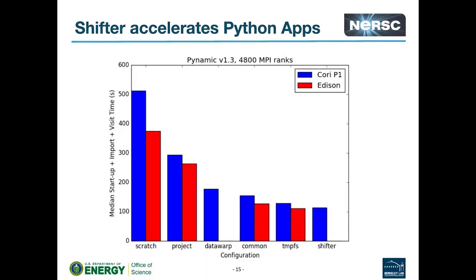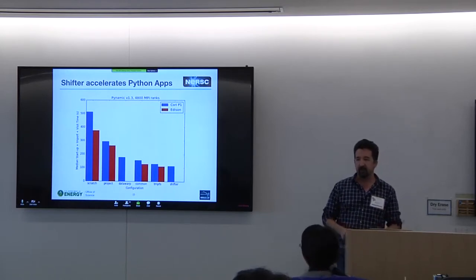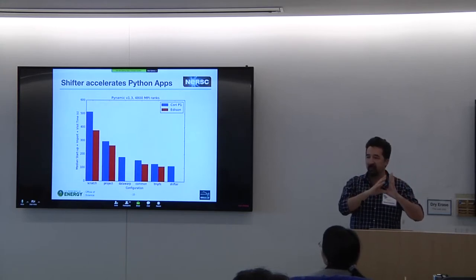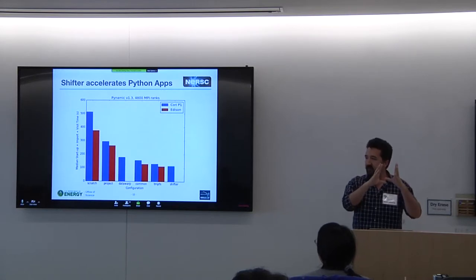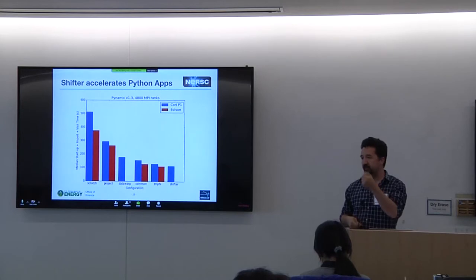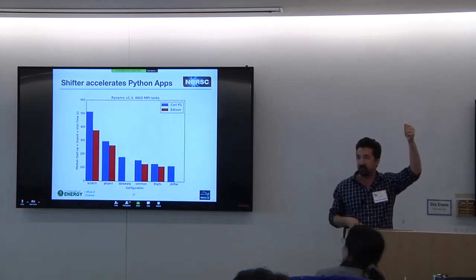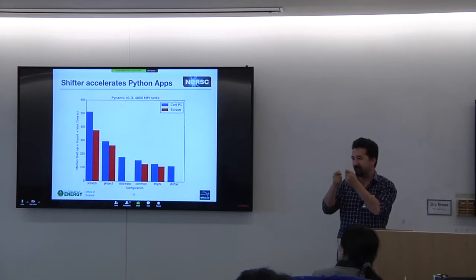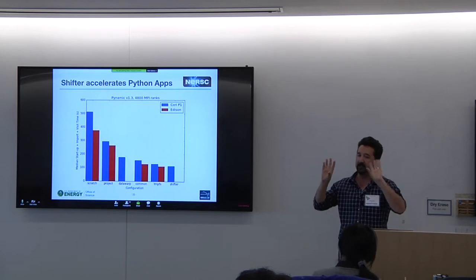When you run a large-scale Python application with hundreds or thousands of MPI ranks, you need to be careful about what file system your Python stack is on. The very best choice is Shifter. The reason is that your entire Python stack is self-contained inside the image, and the image lives on the RAM disk on the compute node. Looking through that to find all your files is really fast. There's none of the involvement of the metadata server on the parallel file system like GPFS or Lustre — all the metadata lookup is localized to the compute node.